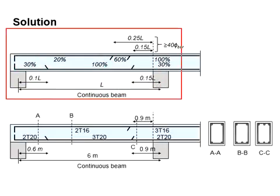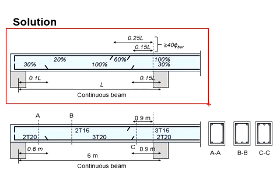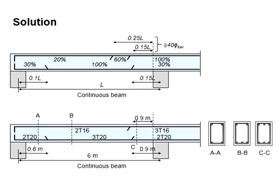This is the requirement for the curtailment of a continuous beam. 3T20 is provided at the mid-span. You may reduce the amount of reinforcement bar to 30%.